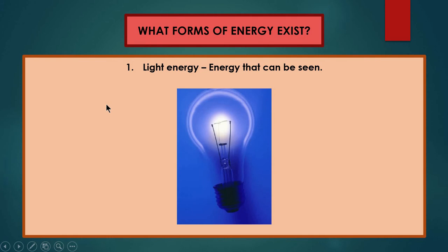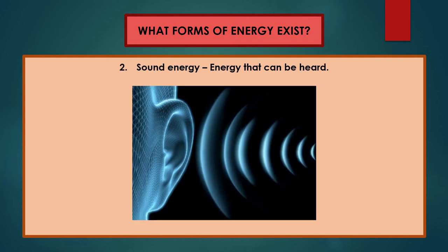What are the forms of energy that exist around us? Number one: light energy is the energy that you can see with your eyes. Next, sound energy is the energy that you can hear — no matter what you hear in this video or in other music, those are sound energy.